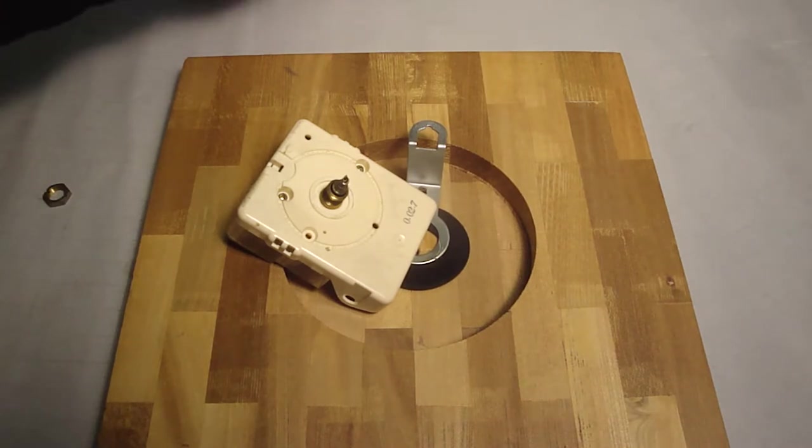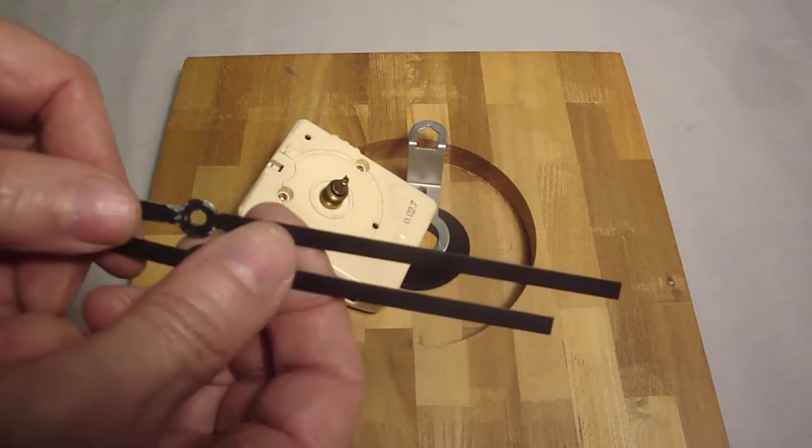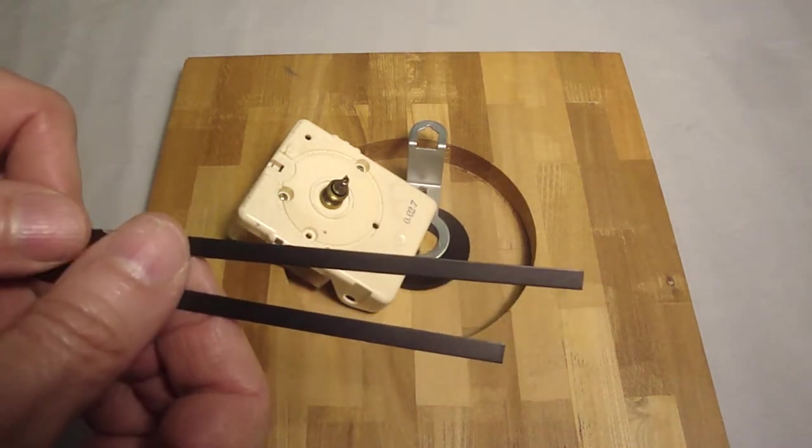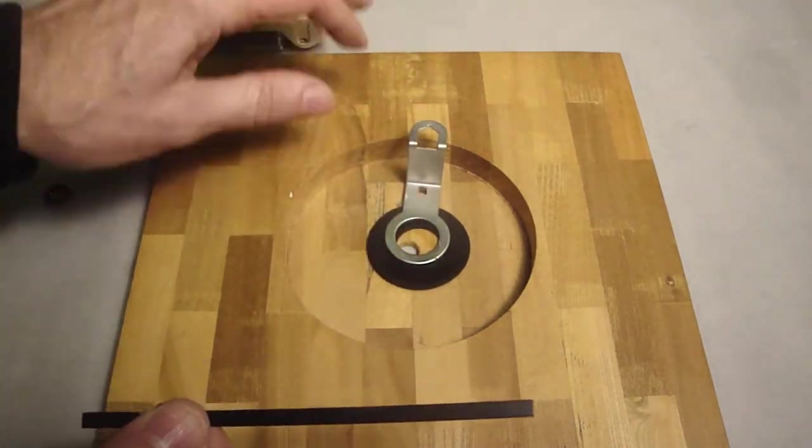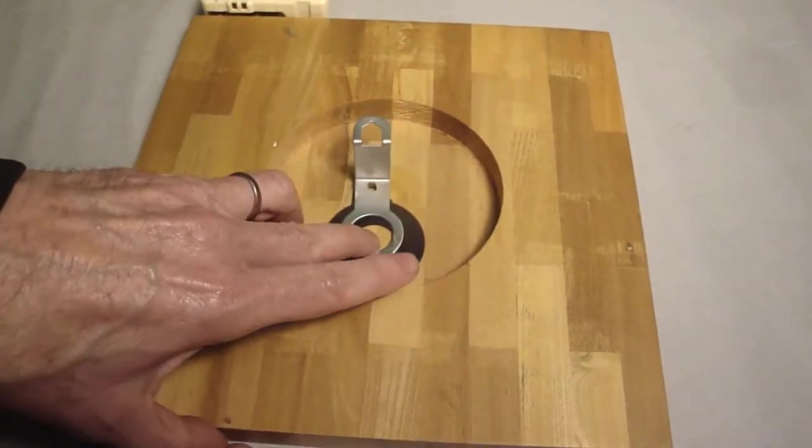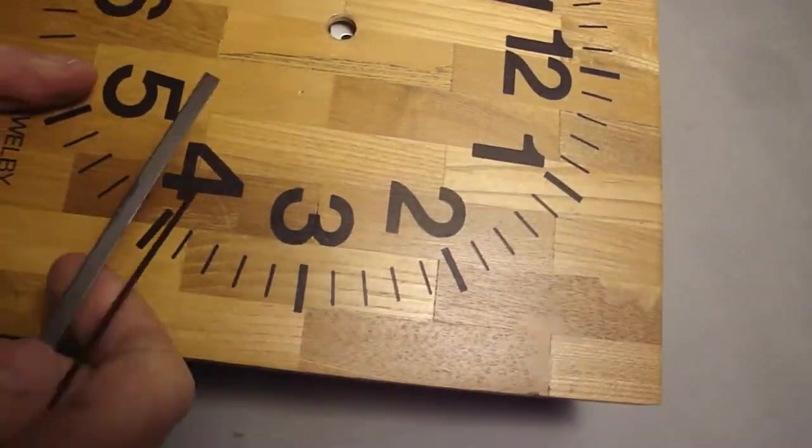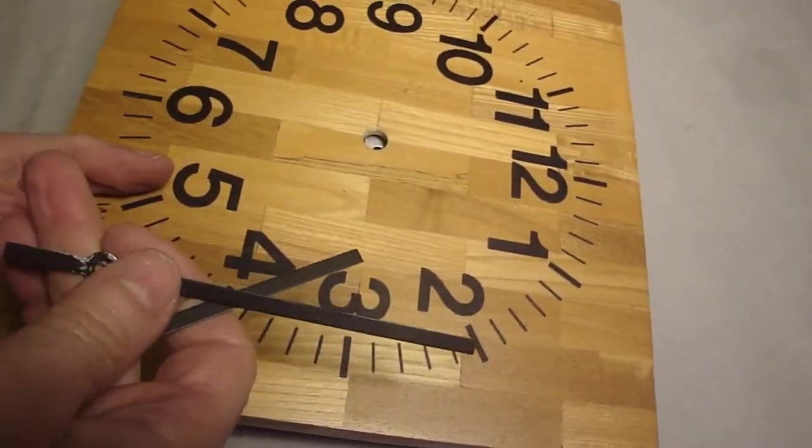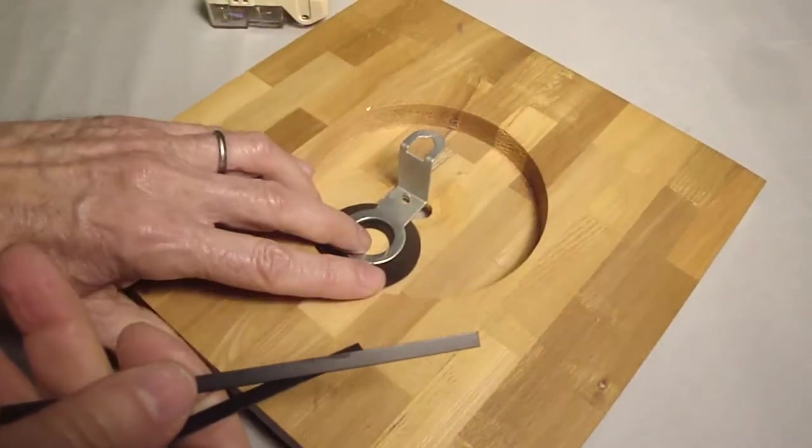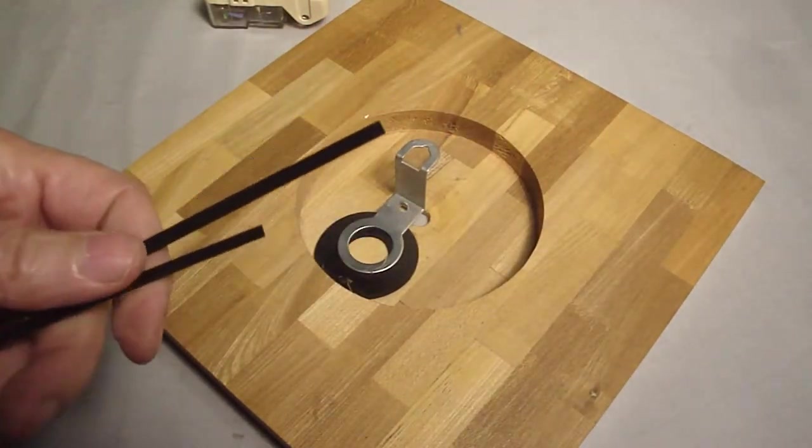Also, when you're looking for a replacement unit, you have to measure the hour hand and minute hand to make sure that it fits the face of the clock, because you don't want them too short and you don't want them too long. So I'm sure if you have something that is too long you could cut them down, but if they're too short you can't stretch them.